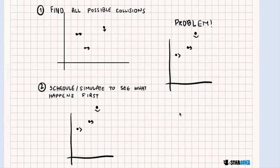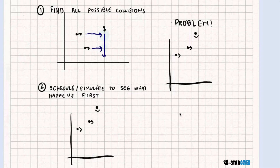In this solution, what we're actually going to do is first find all possible collisions. What this means is if this cow is going to move down here, this cow is going to move here, and this cow is going to move here, we know there are going to be collisions here and here. But if we just simulate all of the collisions without ordering, we're going to come up with an error.